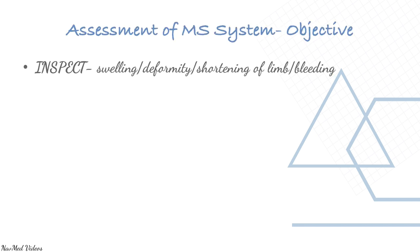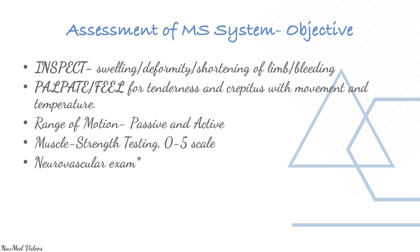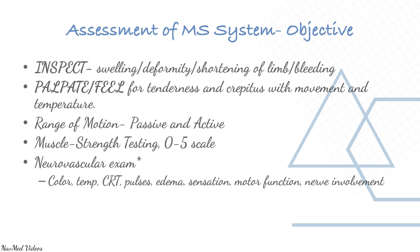Past health history: consider which disease processes affect the musculoskeletal system — TB, polio, infections, diabetes, rickets, rheumatoid arthritis, gout, osteoarthritis, autoimmune disease, especially steroid use with autoimmune diseases. For the objective assessment: inspect for swelling, deformity, and shortening of limb; palpate for tenderness and crepitus with movement and temperature.